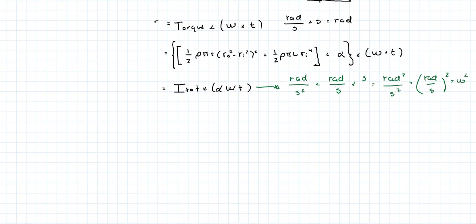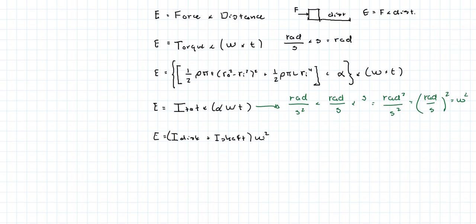Okay. So we have our final expression for energy. The energy contained within the flywheel attached to a disc is equal to the moment of inertia of the disc plus the moment of inertia of the shaft, all of that times rotational velocity squared. And there you have it. We're going to circle our answer.